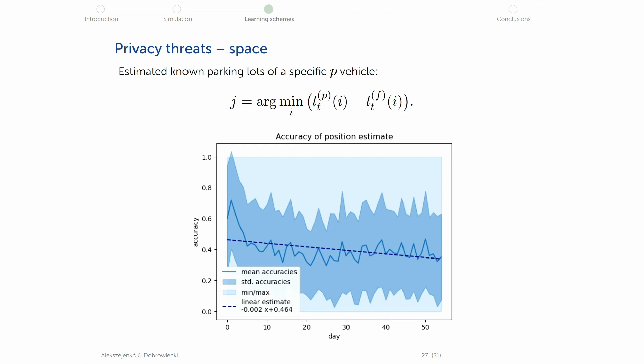And in the beginning, it's a very good approximation. Out of the five, you can, in average, find or identify 2.5 parking lots correctly. So on average, it's still a privacy threat. But with time, this accuracy rate decreases.